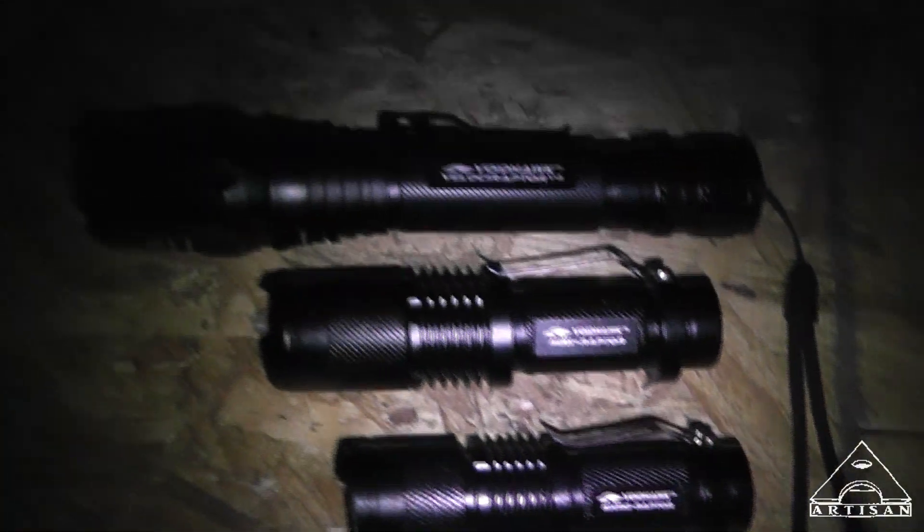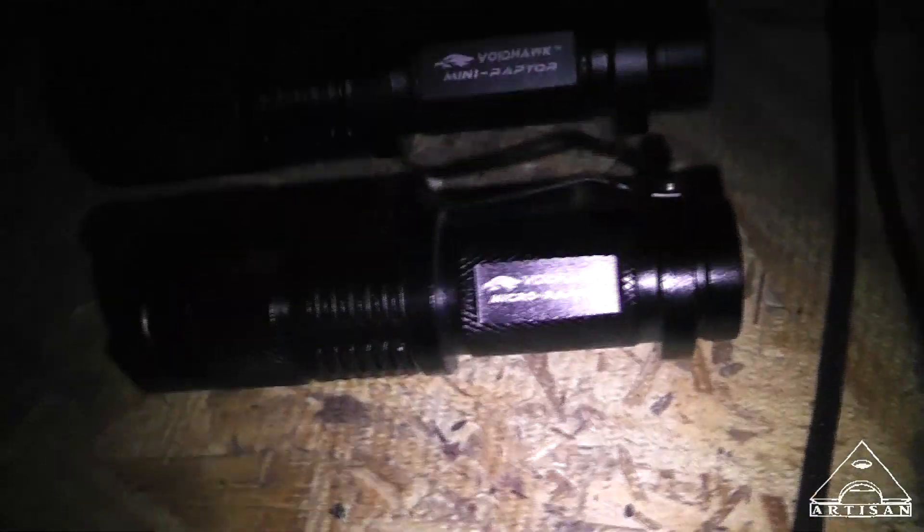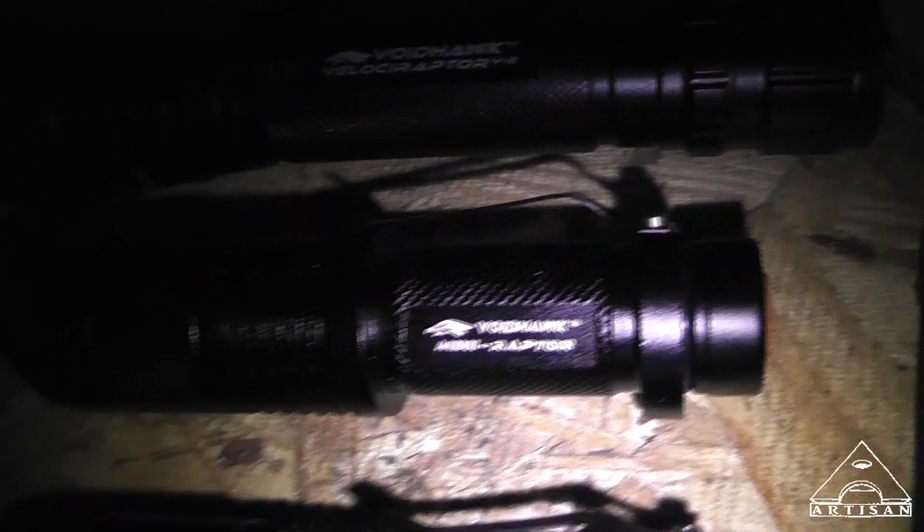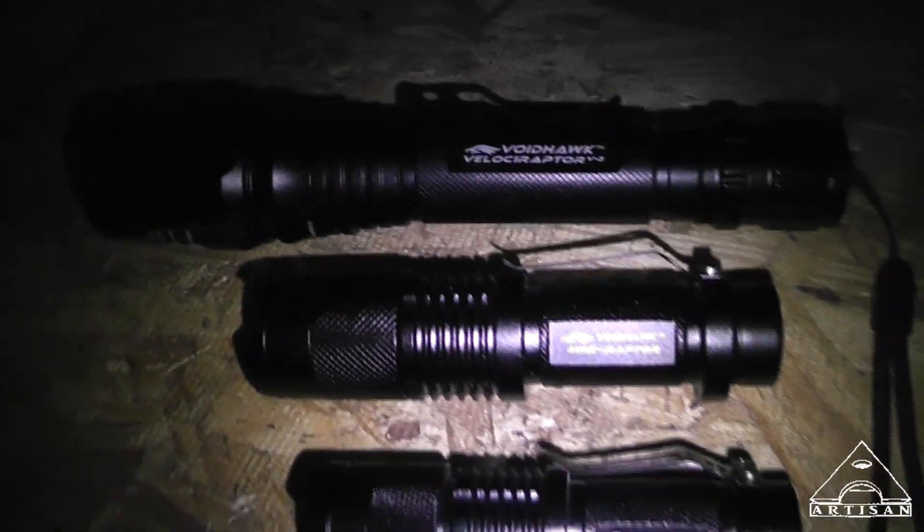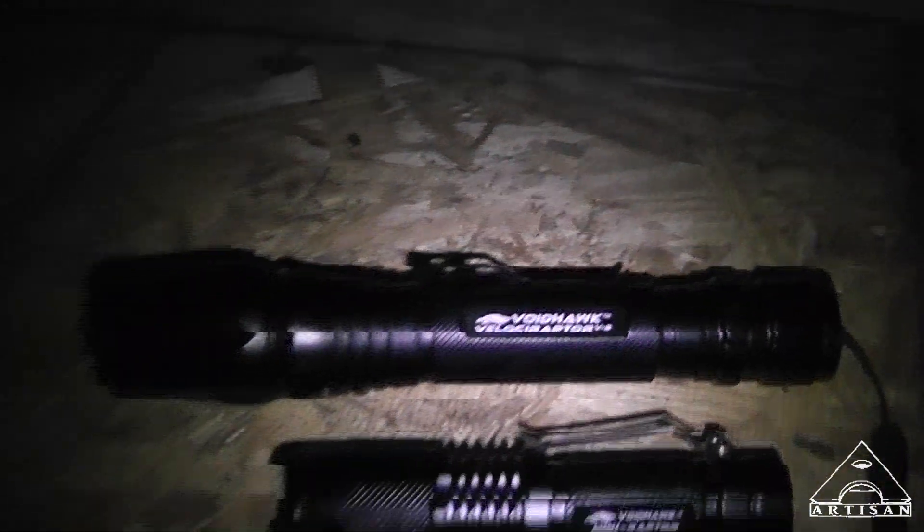Okay, so what we have are Voidhawk flashlights. So far, I'm digging them very much. This is the Micro Raptor, 300 lumen. This is the Mini Raptor at 600 lumen. And this is the Velociraptor, the big baby at 800.